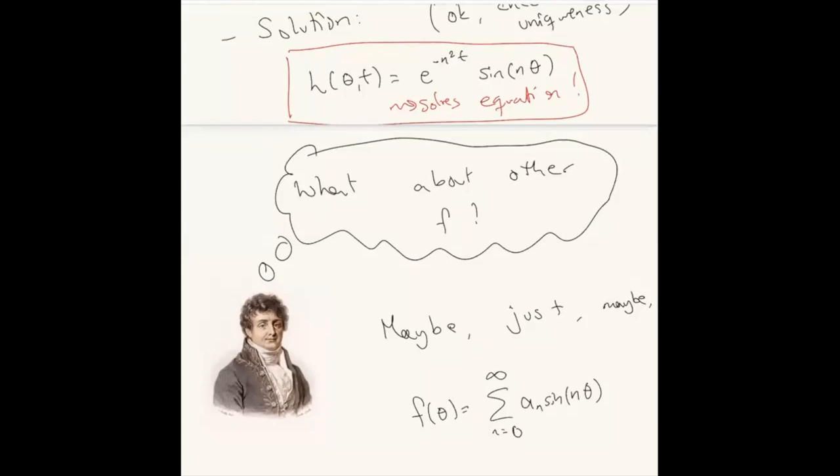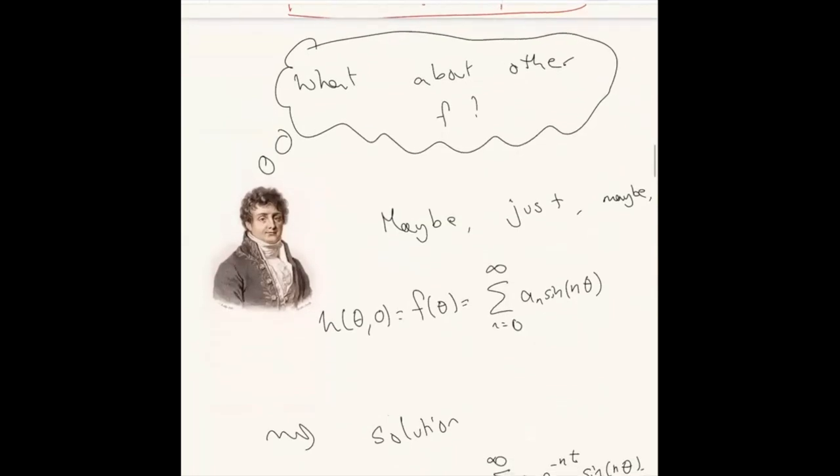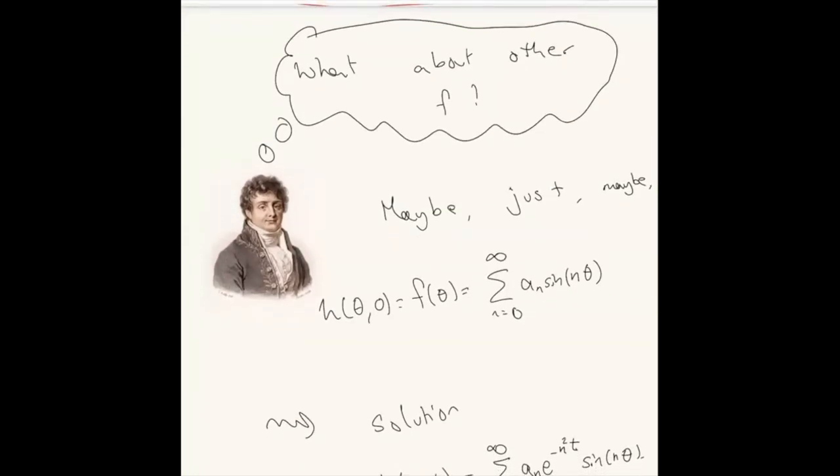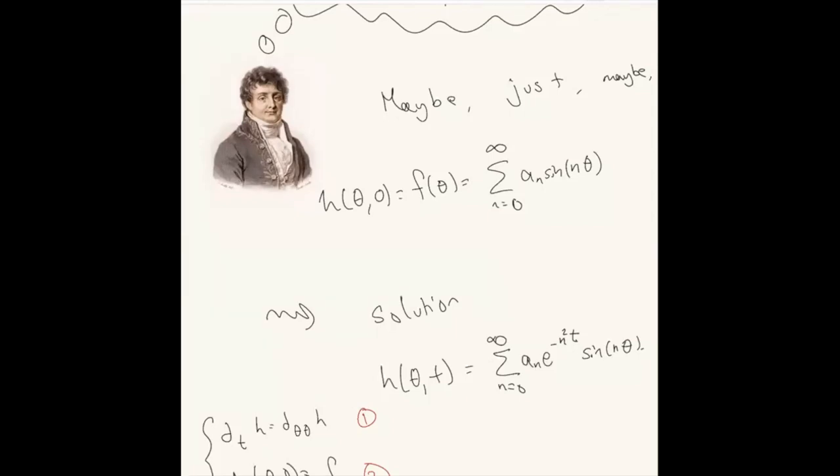We were able to solve the equation for sin(nθ). What about other f? We'd have to solve cos(nθ) also, but we'll get to that later. Maybe you could express the initial condition h(θ,0) as a sum of sin(nθ). But there are infinitely many things, so it's not a finite sum but an infinite linear combination. If we solve each of these individually - the solution of aₙsin(nθ) would be aₙe^(-n²t)sin(nθ) - then by linearity we'd expect the solution would be a sum of these solutions.